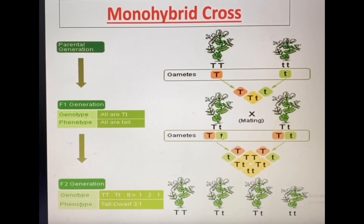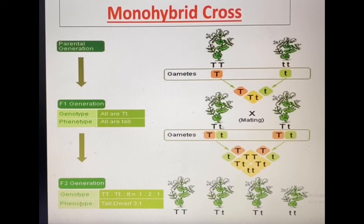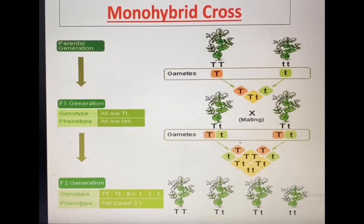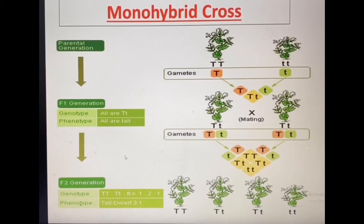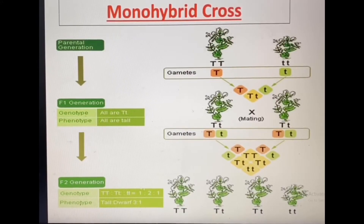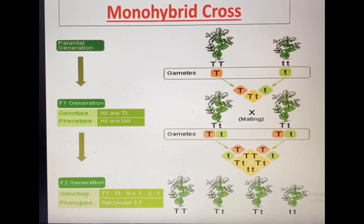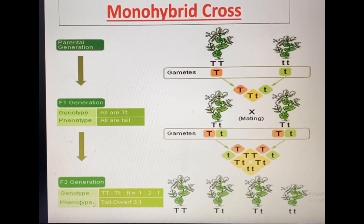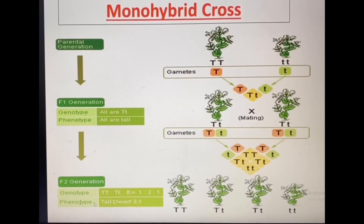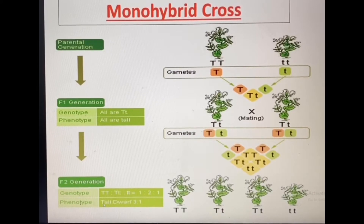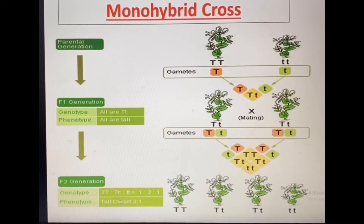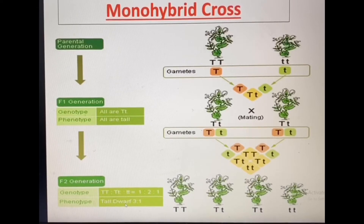When the heterozygous F1 generation — capital T small t crossed with capital T small t — pea plants are allowed to self-fertilize, in the F2 generation it appears to have three tall plants and one short plant. The genotypic ratio is different from the phenotypic ratio. The phenotypic ratio — meaning the expression of the phenotypic condition — is three tall generations of pea plants and one dwarf or short, giving a ratio of three to one.